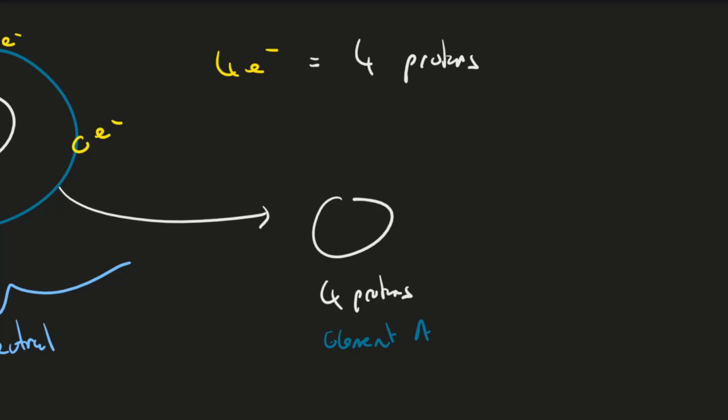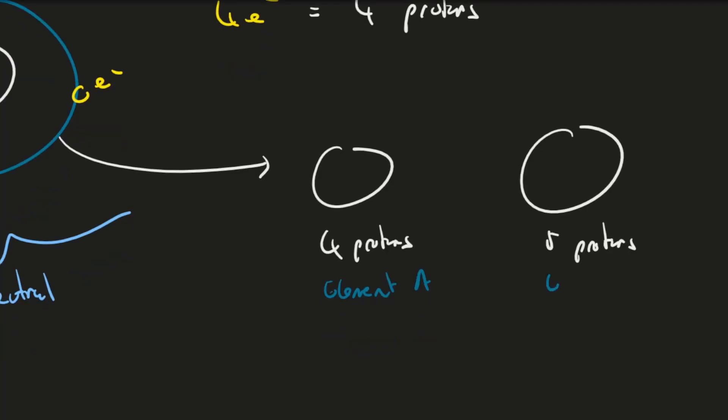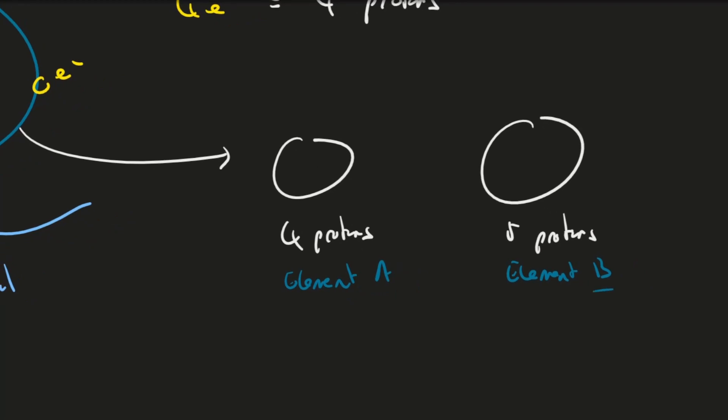But if we take an atom and discover it has five protons, we've discovered a new element. These are now two different elements. Anything with five protons is Element B, and anything with four protons is Element A. You can look at the periodic table to discover what these elements would be.